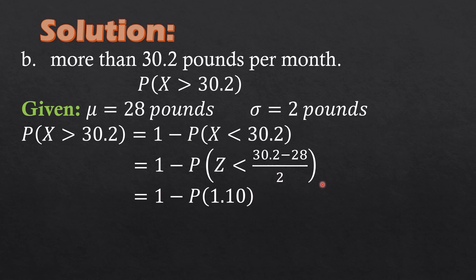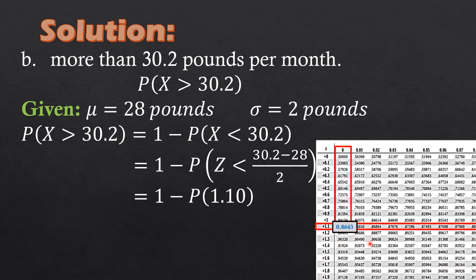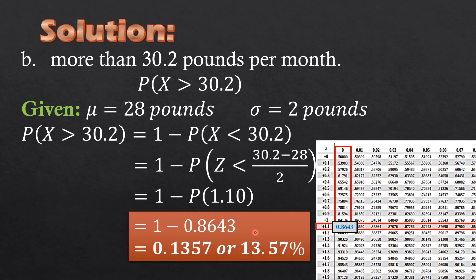We subtract from 1. From the positive z-table, row 1.1 and column 0 gives an intersection of 0.8643. So 1 minus 0.8643 equals 0.1357, or 13.57 percent.